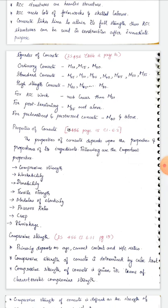Different grades of concrete include standard grades up to M50 and M55, high strength concrete M60 and M65 up to M80. For RCC work, not less than M20 is used. For post-tensioning, M35 and above. For pre-tensioned prestressed concrete, M40 and above.